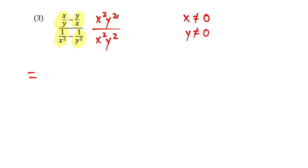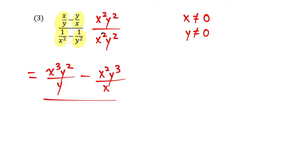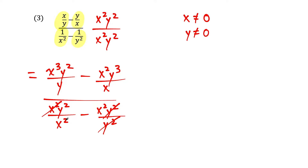In the next line, x squared y squared times x gives us x cubed y squared over y, and then minus x squared y squared times y gives x squared y cubed over x. On the bottom, multiplying gives x squared y squared over x squared, minus x squared y squared over y squared. We cancel: y squared over y squared cancels, x squared over x squared cancels. Using the rule a to the b over a to the c equals a to the b minus c, y squared over y to the first reduces to y to the first, and x squared over x to the first reduces to x to the first.